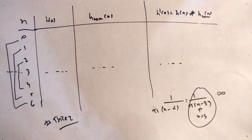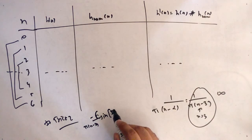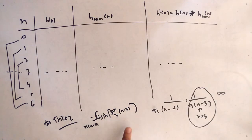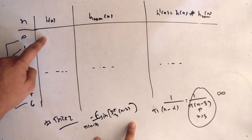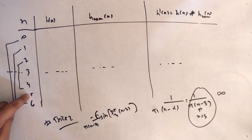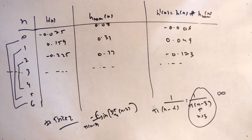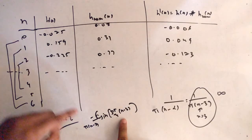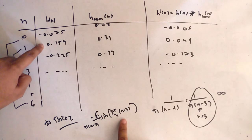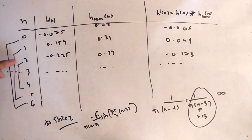Using the formula h(n) = −sin(3π/4·(n−3)) / (π(n−3)), substitute n = 0, 1, 2 to get three values. The corresponding values for n = 4, 5, 6 are the same as n = 2, 1, 0 respectively. Similarly for the Hamming window, compute h_ham for n = 0 through 6 using h_ham(n) = 0.54 − 0.46·cos(2πn/6).